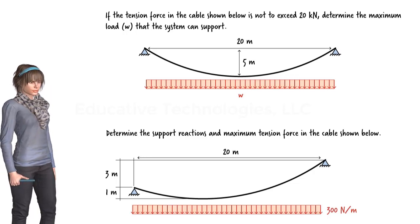If we cut the cable at its centre, the free body diagram of the right segment shows T0, the tension force in the cable at the cut point. We can determine T0 using a moment equilibrium equation. The sum of the moments about point B must be zero, and therefore T0 can be calculated. Knowing T0, we can now determine the reaction forces at B by setting the sum of the forces in the X and Y directions to zero.